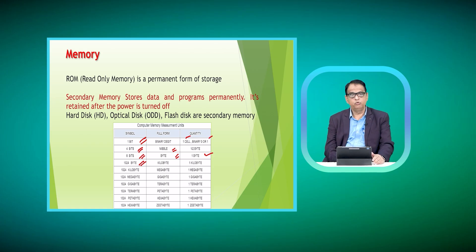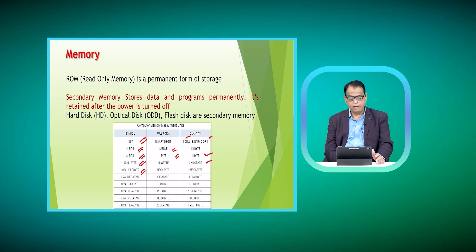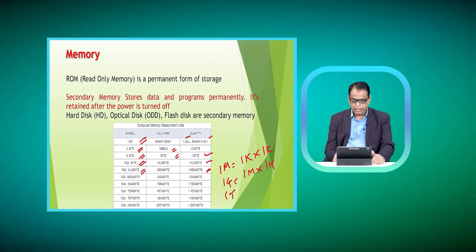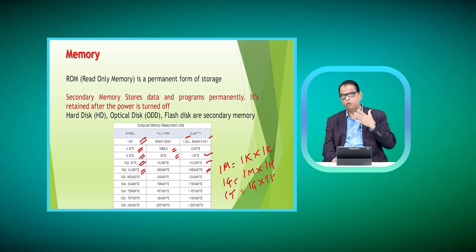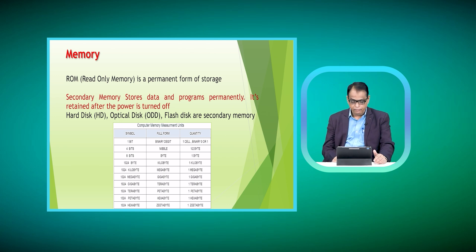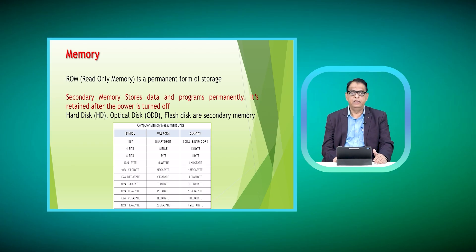When we have 2 raised to 10 bytes, that is 1024 bytes, it is called 1 kilobyte. When we have 2 raised to 20 bytes, that is called 1 megabyte — 1 megabyte is 1 kilobyte times 1 kilobyte. Then we have 1 gigabyte, which is 1 megabyte times 1 kilobyte, and then 1 terabyte, which is 1 gigabyte times 1 kilobyte. After terabyte we have petabyte, hexabyte, and zettabyte, where the storage capacity is very large.